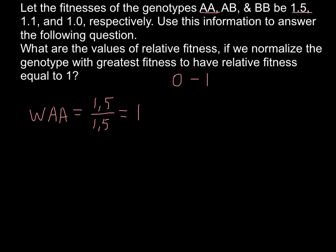Now we make a relation between this highest-fitness genotype and the other genotypes. For genotype AB, its fitness is 1.1. So W_AB = 1.1 divided by 1.5, and the answer is 0.73 (rounded).